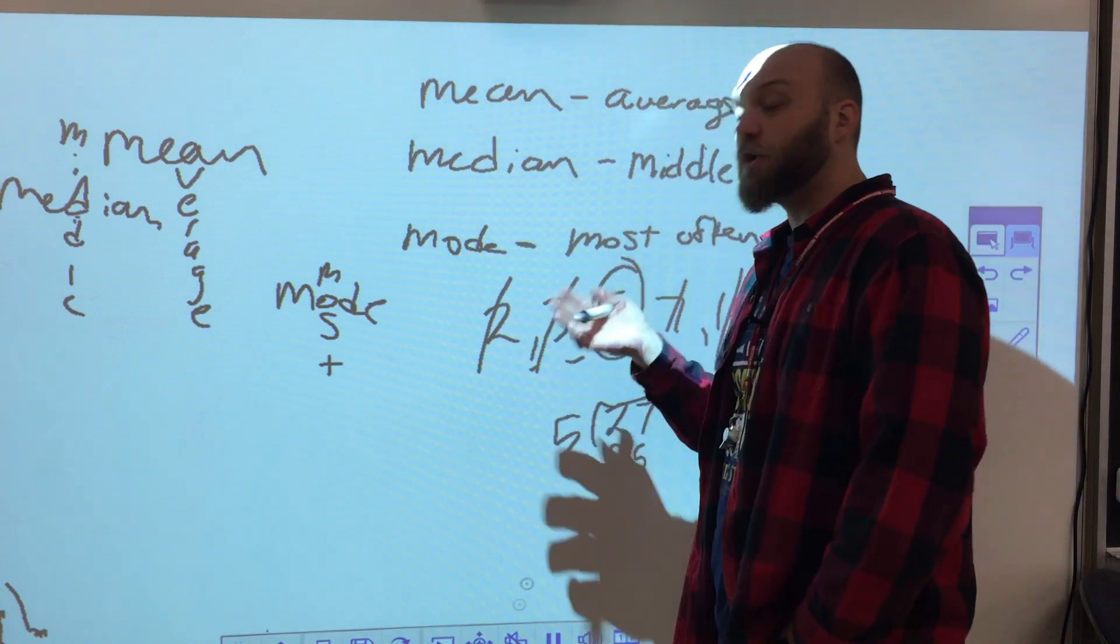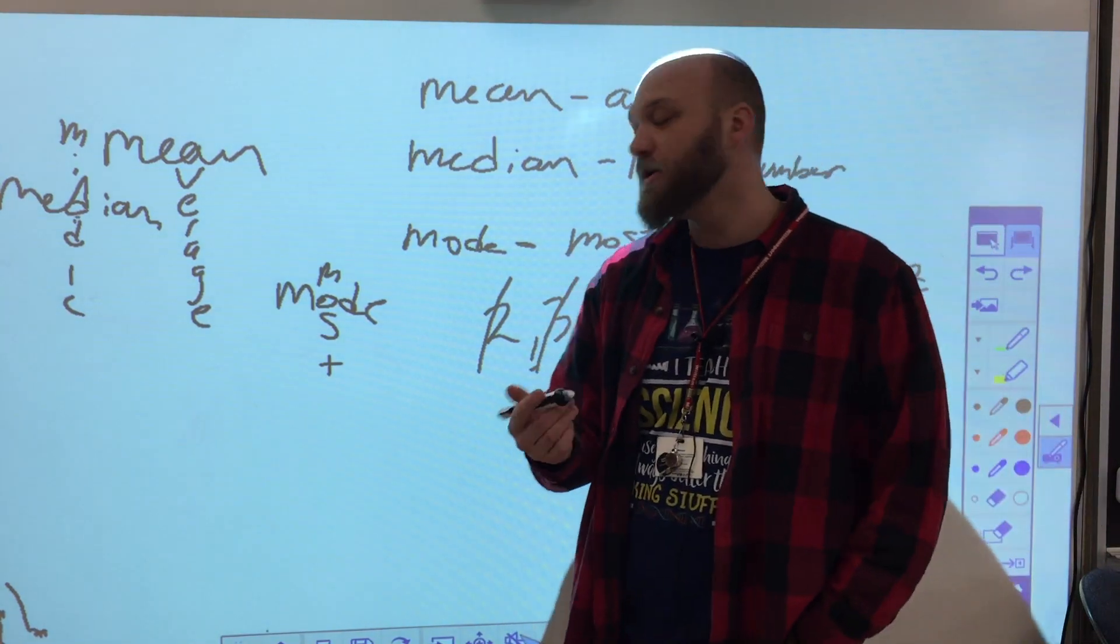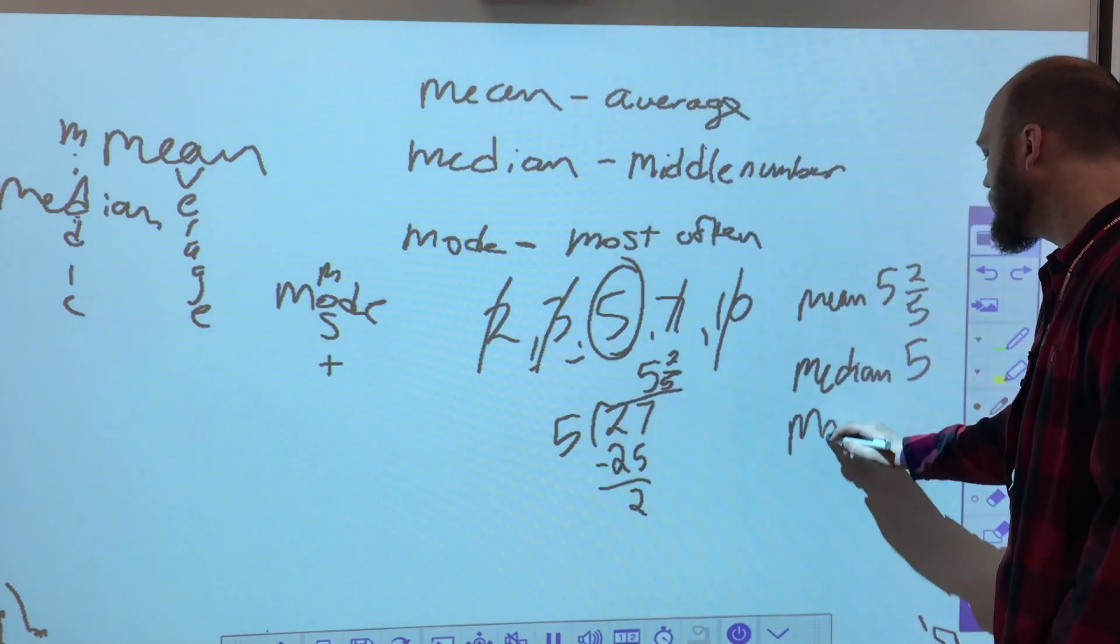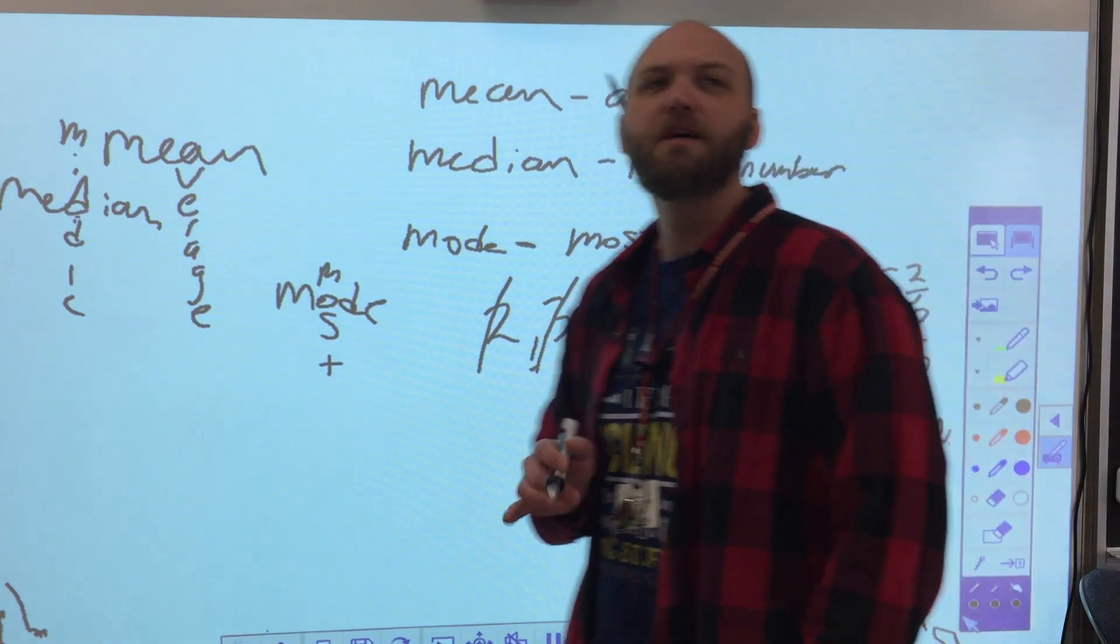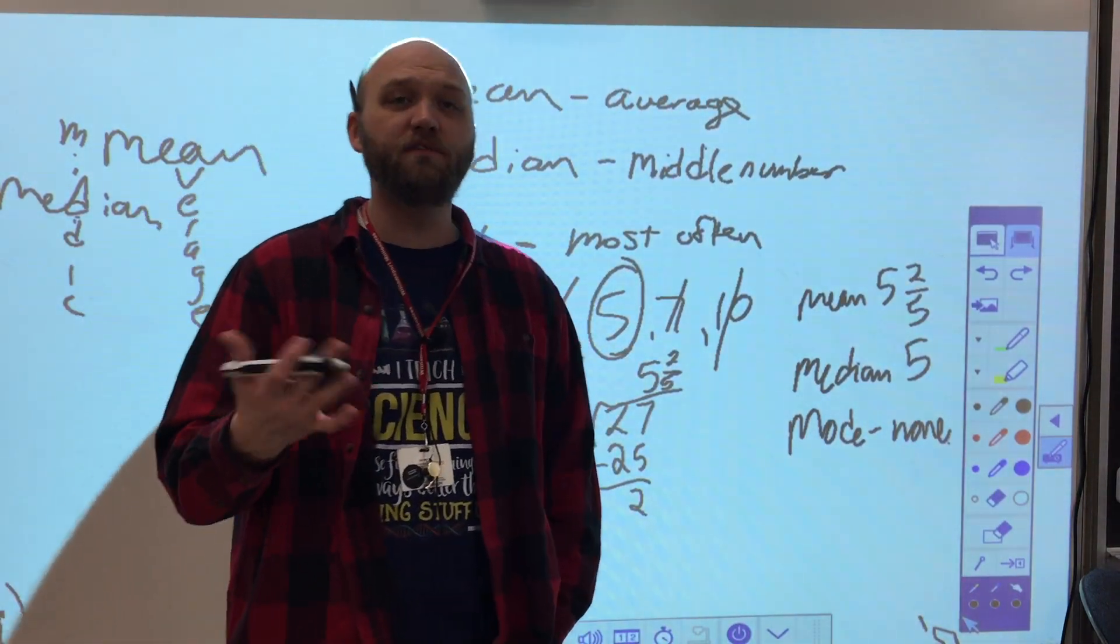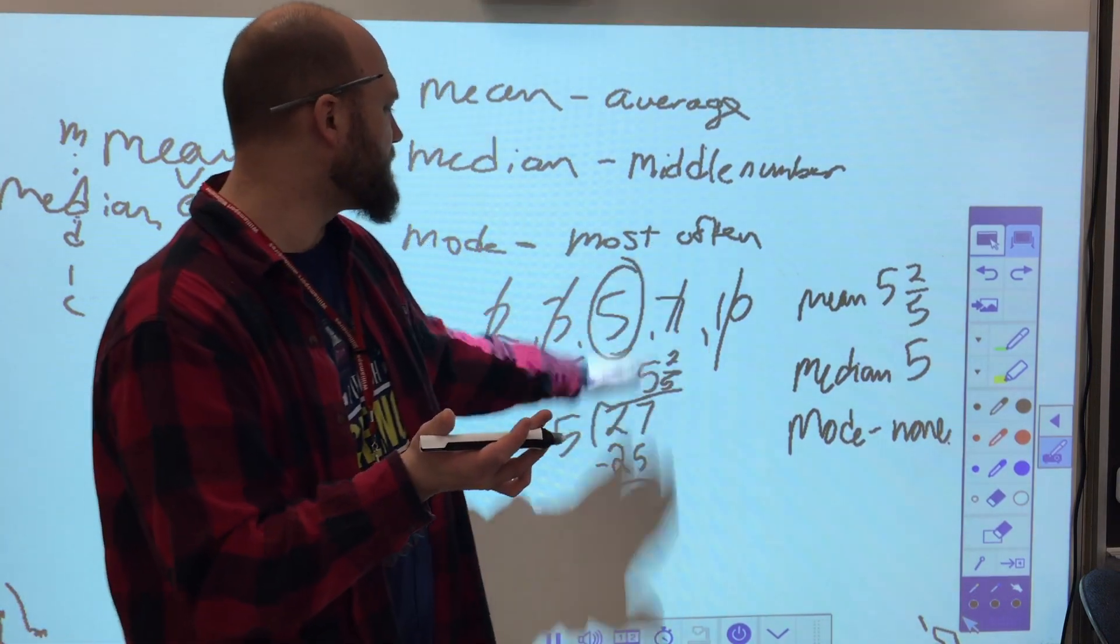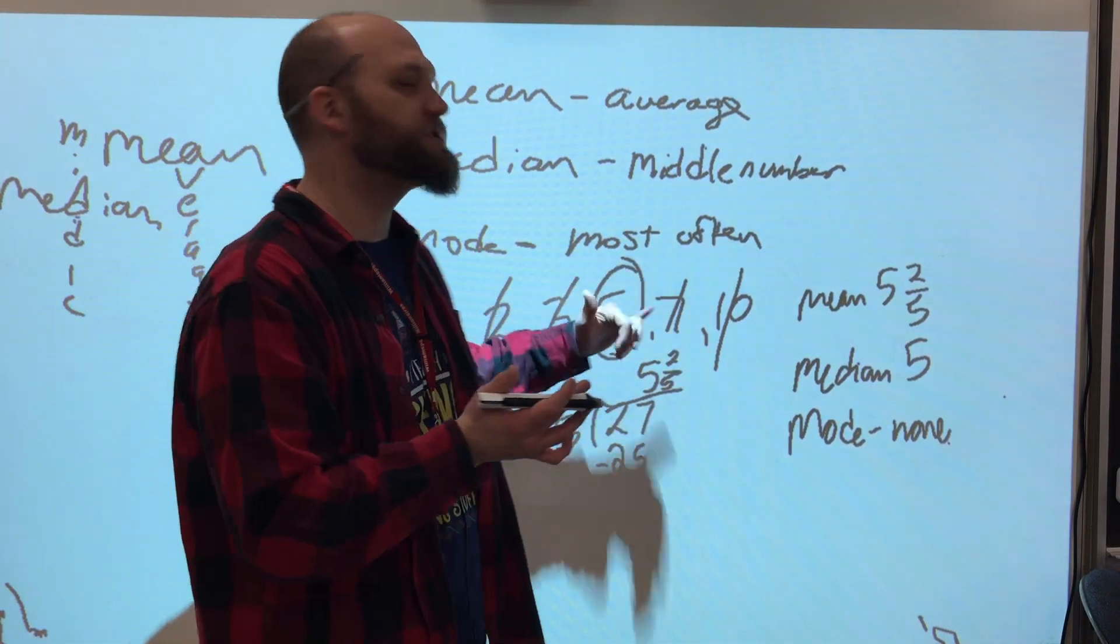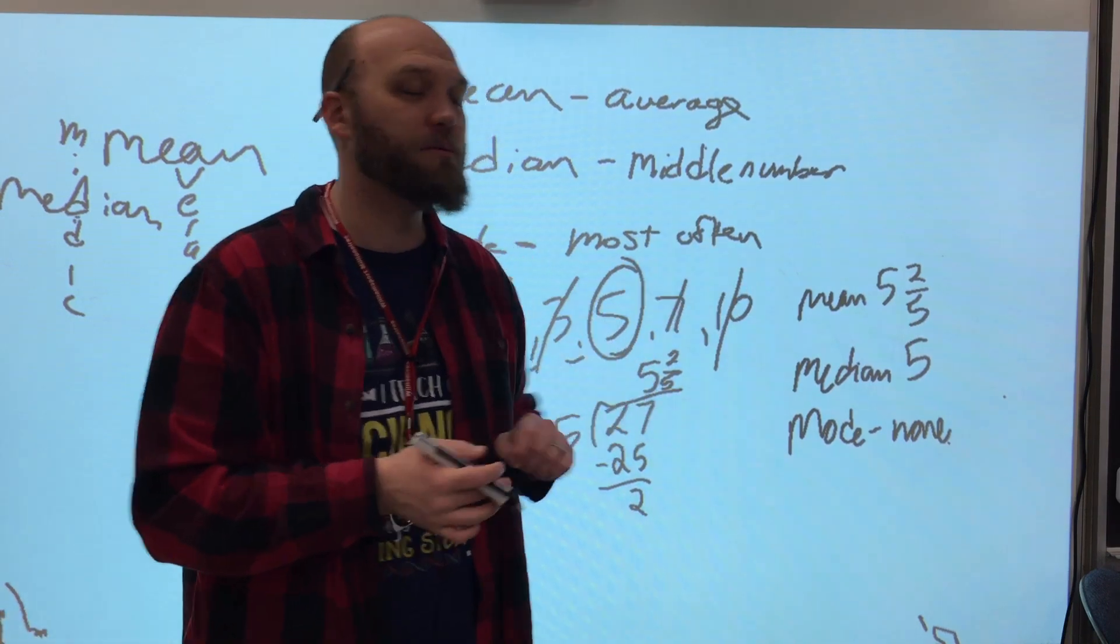Ultimately, I don't have a mode because no number occurs more often than any other number. So for my mode, there is none. If I had two fives, my mode would be five. But if I had two twos and two fives, well, then my mode is actually two and five. It would be both numbers.